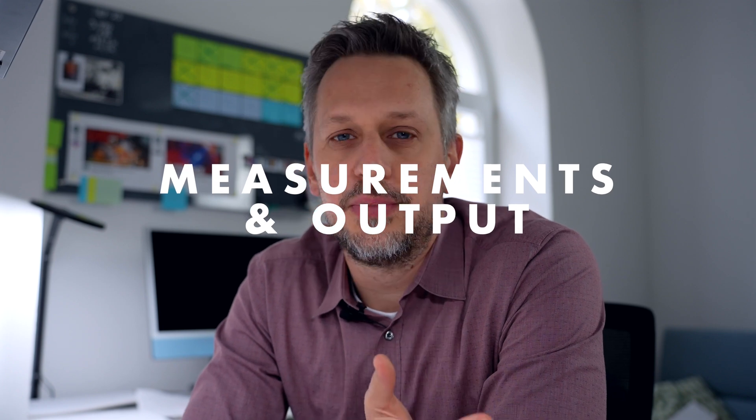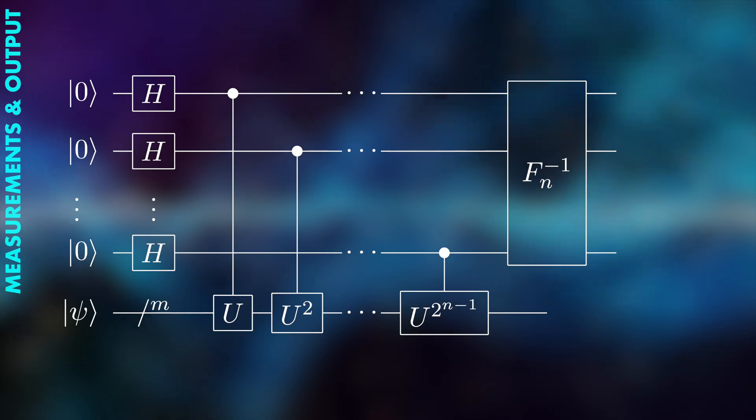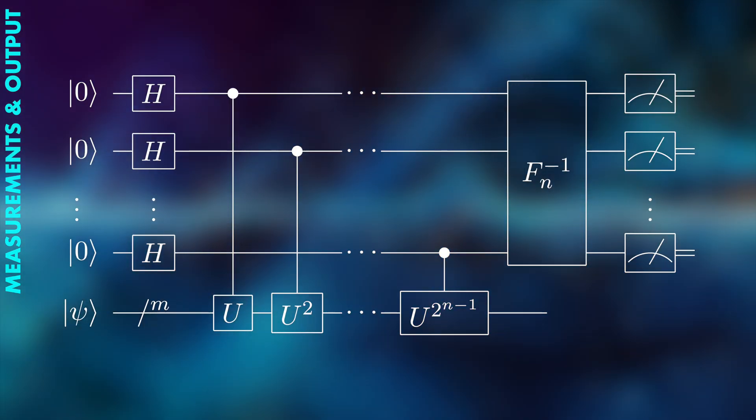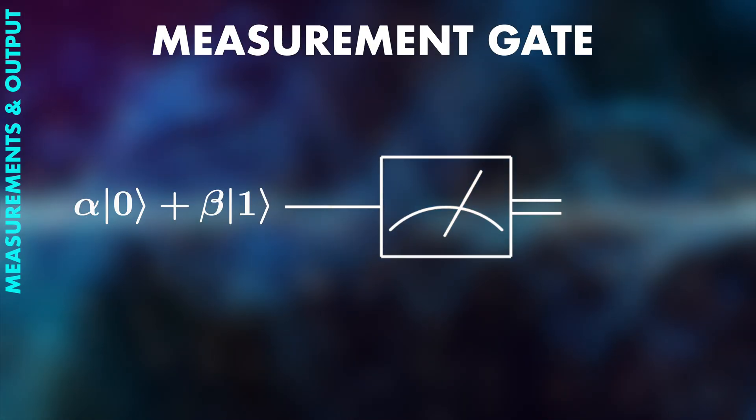The only way to get output from a quantum computation is to make a measurement. In the language of circuits and gates, a measurement can also be considered a gate. The big difference is that measurements are not reversible.